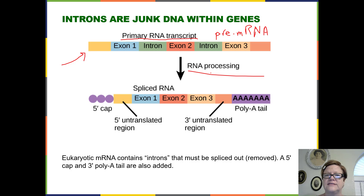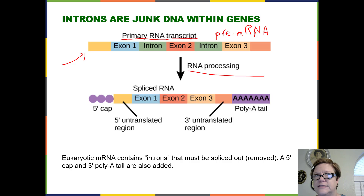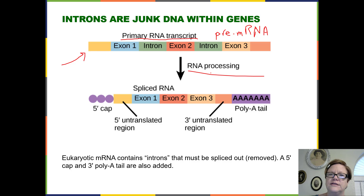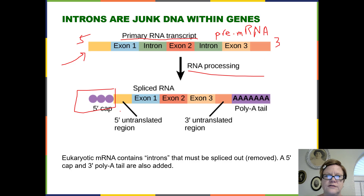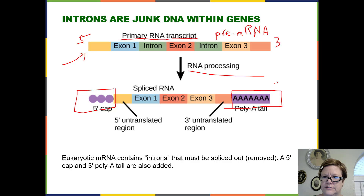RNA processing is similar to how proteins are processed in the Golgi — things are trimmed off and added on. This RNA processing happens in the nucleus. What's added is the 5' cap on the 5' end of the RNA, since the RNA is made from 5' to 3'. At the 3' end, there's a long chain of A nucleotides added — that's the 3' poly-A tail. So there's a cap and a tail, which helps make the RNA a little more stable.